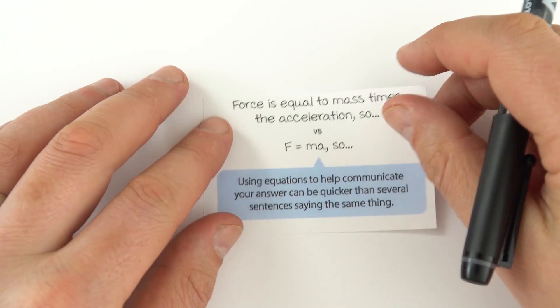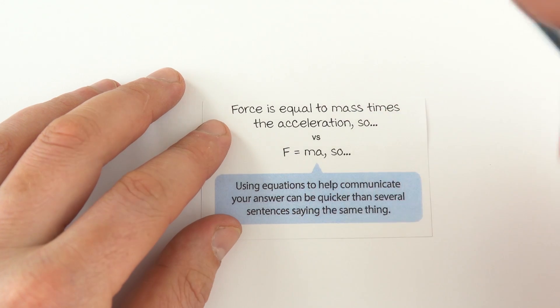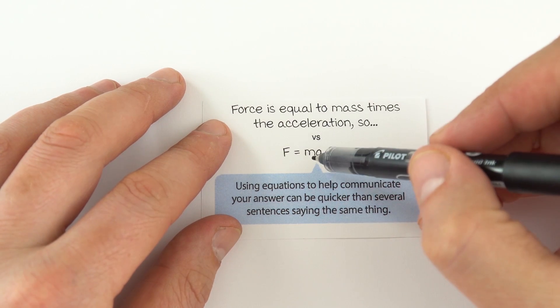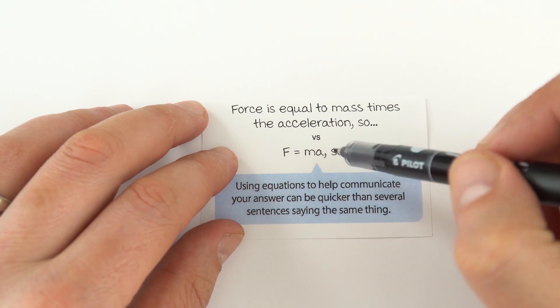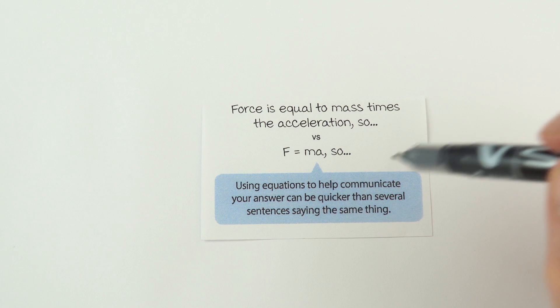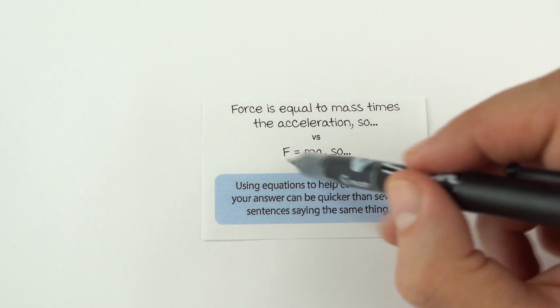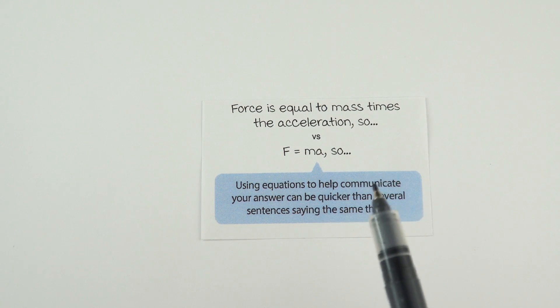Going back to one of my earlier points about you don't need to write everything in massive long sentences. Sometimes you can actually use the equation instead. So rather than saying that force is equal to the mass times the acceleration, if you put down F equals MA, that makes just as much sense. Because the people who are going to be marking your papers, they know the science, and they know that F equals MA. They know what all of these things stand for. So what this can do is it means that your answers are concise, it's quicker to write down, and often they're clearer. So sometimes equations can really help your answer.